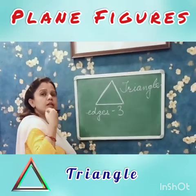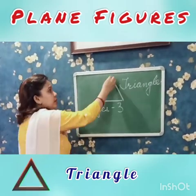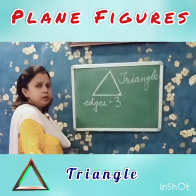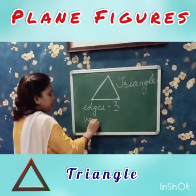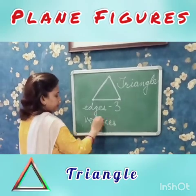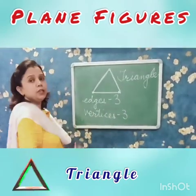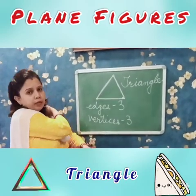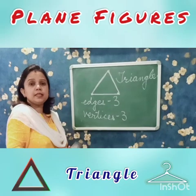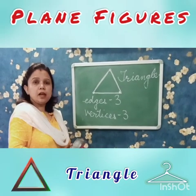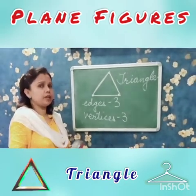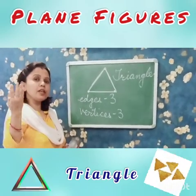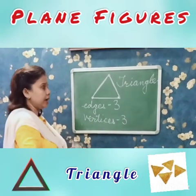How many vertices can you see? This is one corner, another corner two, and another corner three. So it has three vertices. Like you all eat sandwich — sandwich is in the shape of a triangle. You all have seen a hanger; you hang clothes, that is also in the shape of a triangle. Bingo chips that you eat are also in the shape of a triangle.